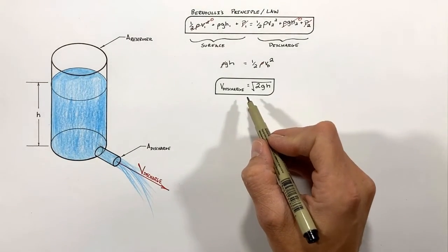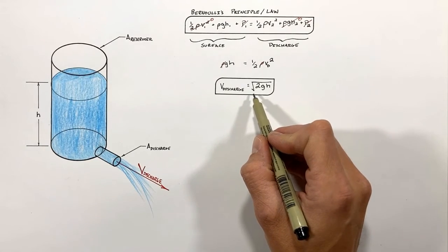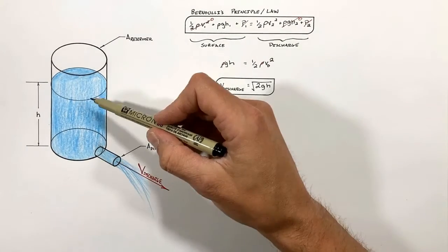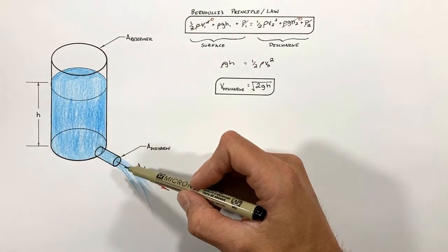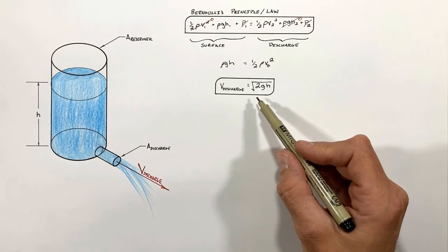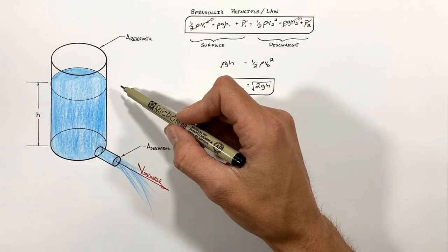And the last key point about this result that needs to be brought up is that this result is only valid for a frictionless system. If we put some drag in this pipe or add some viscosity to this fluid, then the discharge velocity will be less than that which we came up with here.